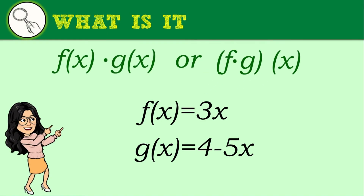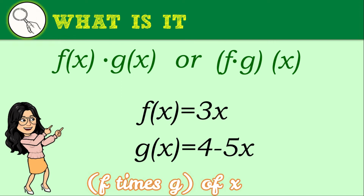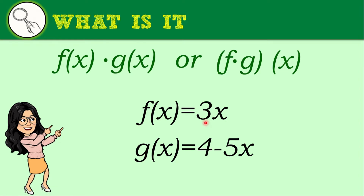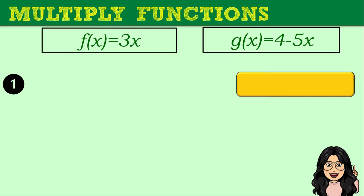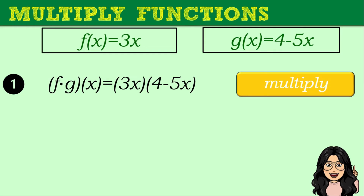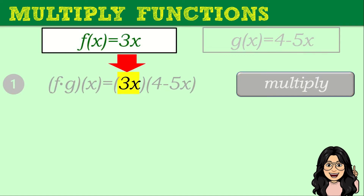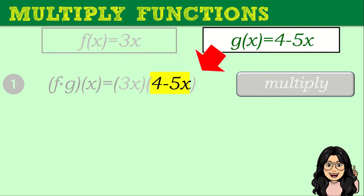Let's find the product of f(x) and g(x) — we are looking for f times g of x. If f(x) = 3x and g(x) = 4 − 5x, we follow these steps. Step 1: multiply by expressing in the form f times g of x equals 3x multiplied to the quantity 4 − 5x, where 3x is our f(x) and 4 − 5x is our g(x).